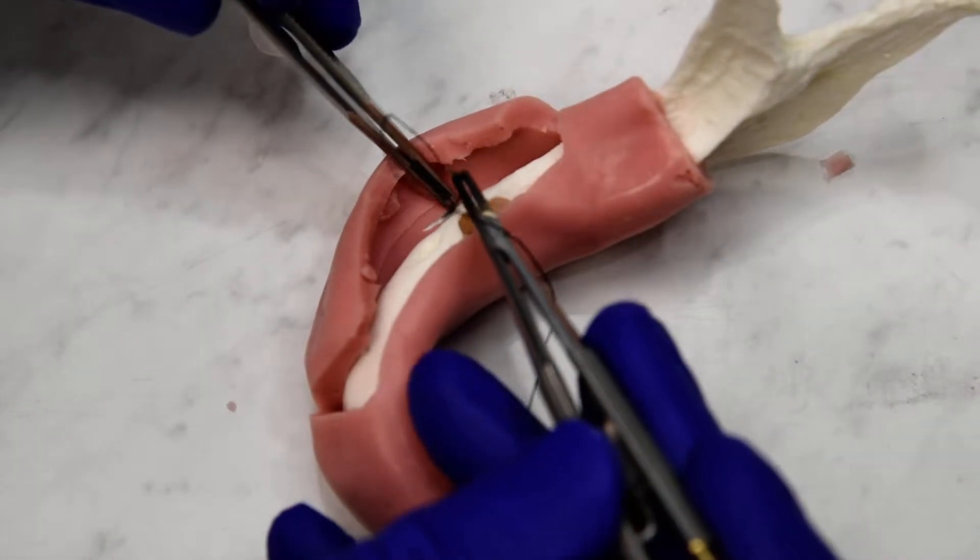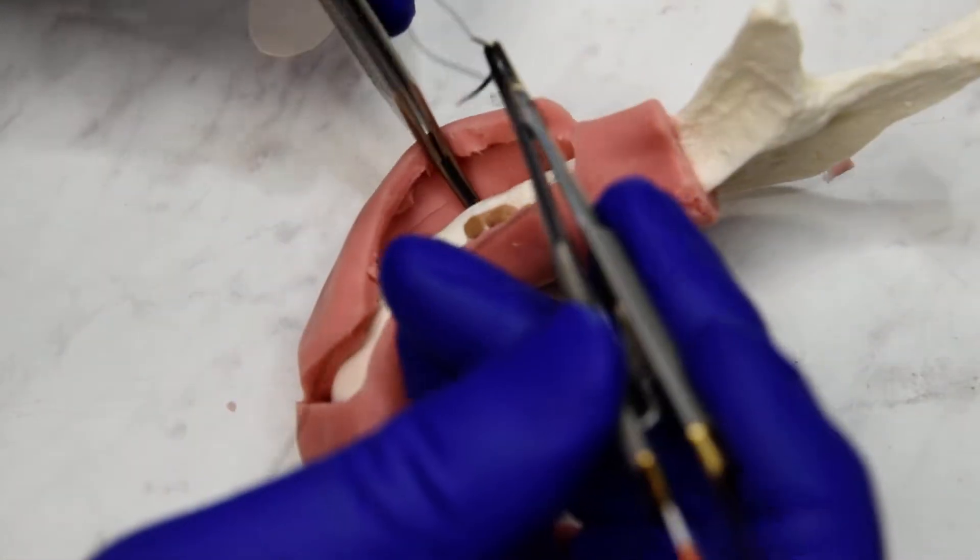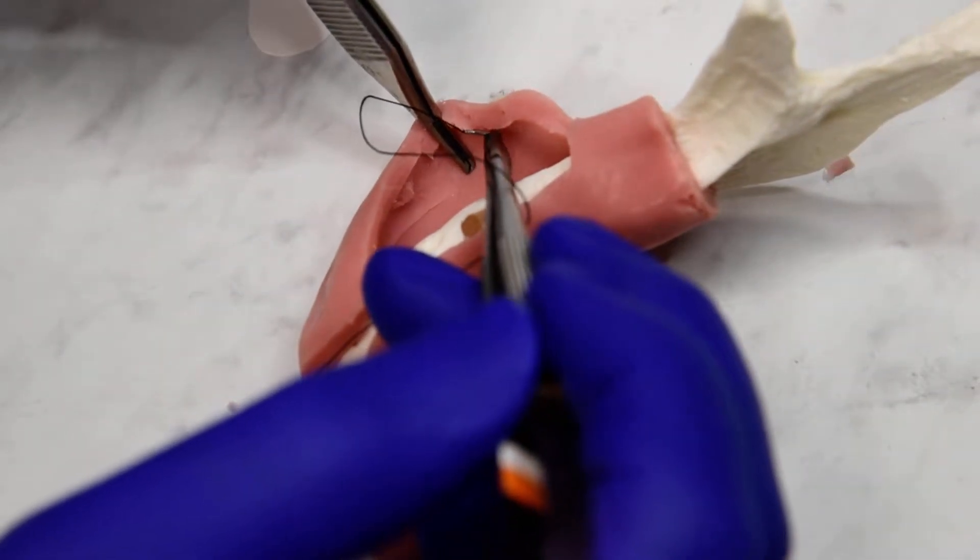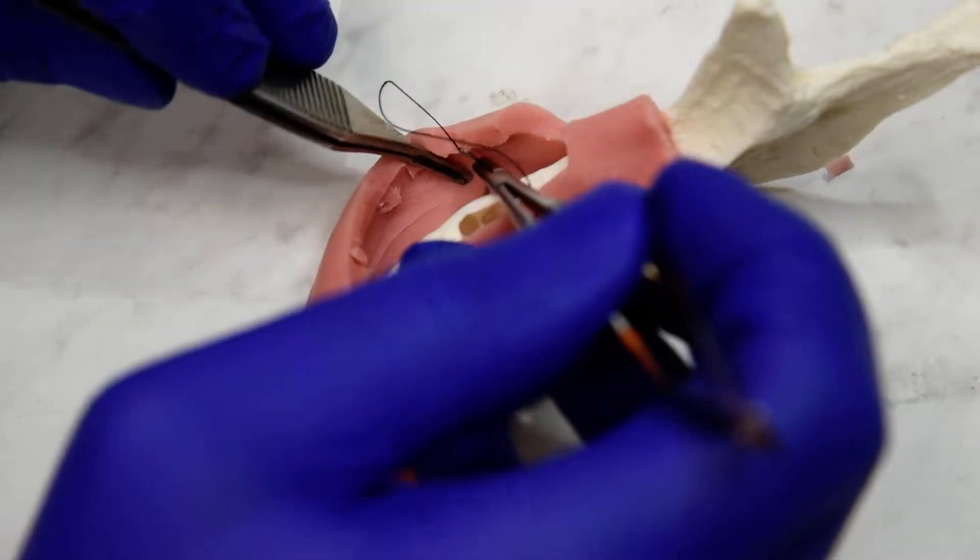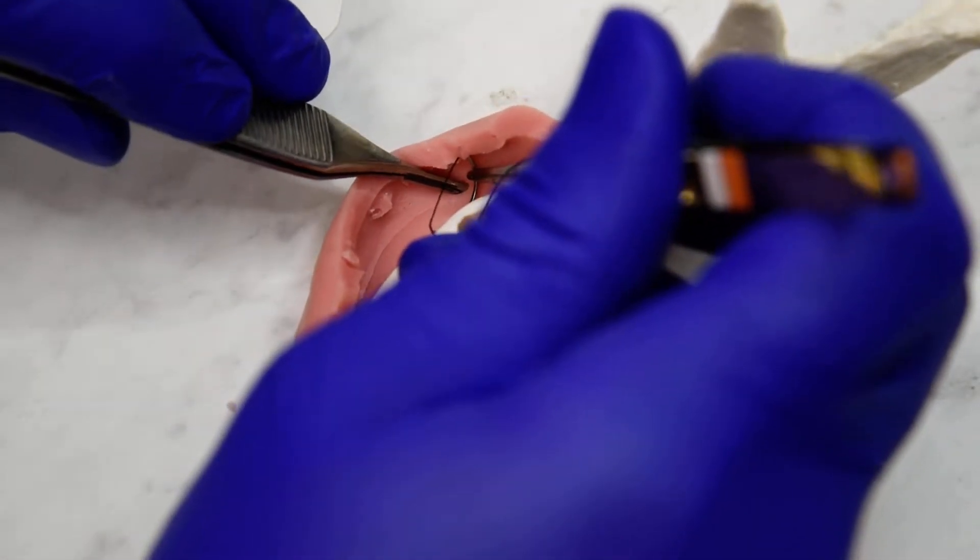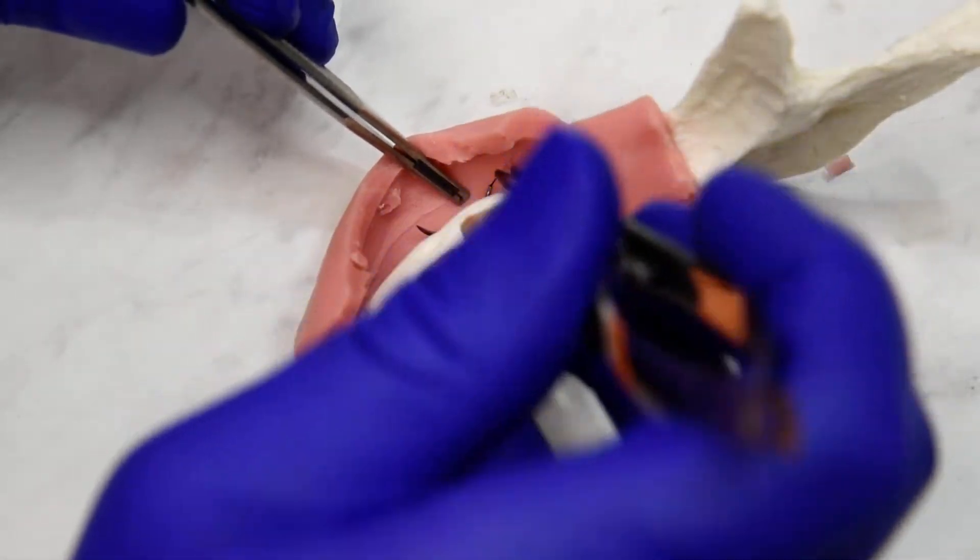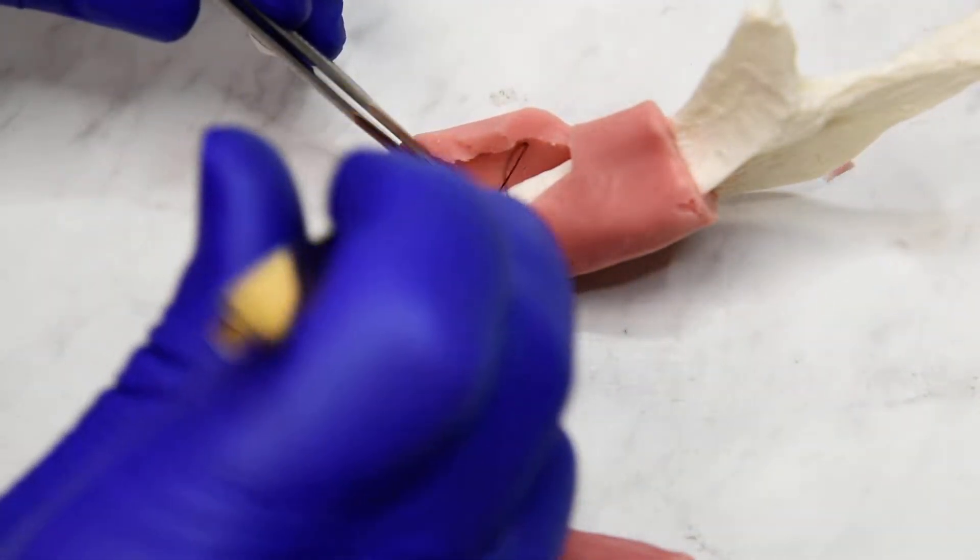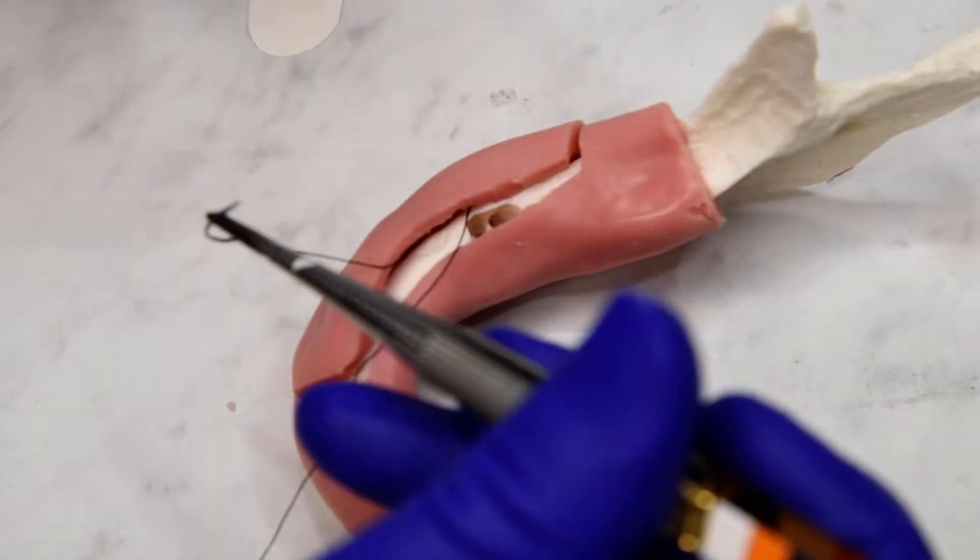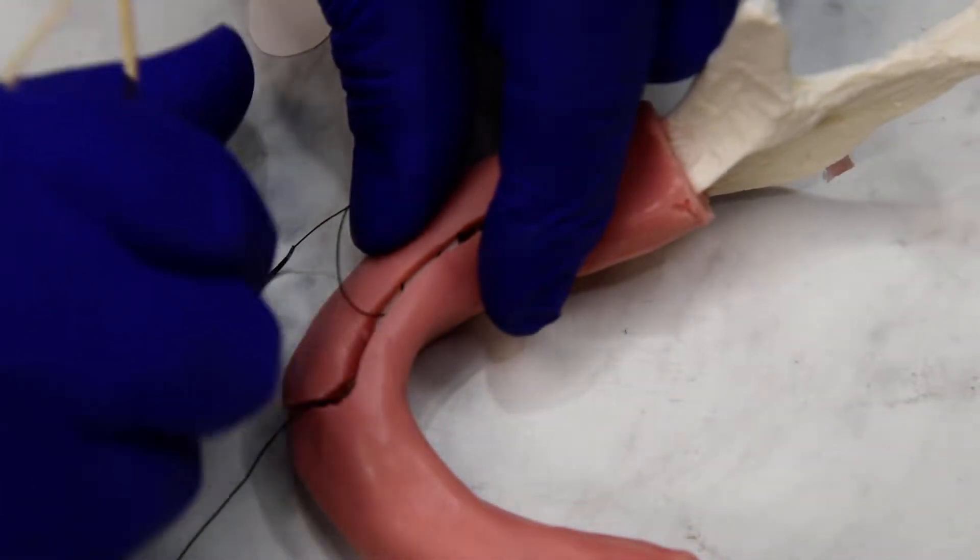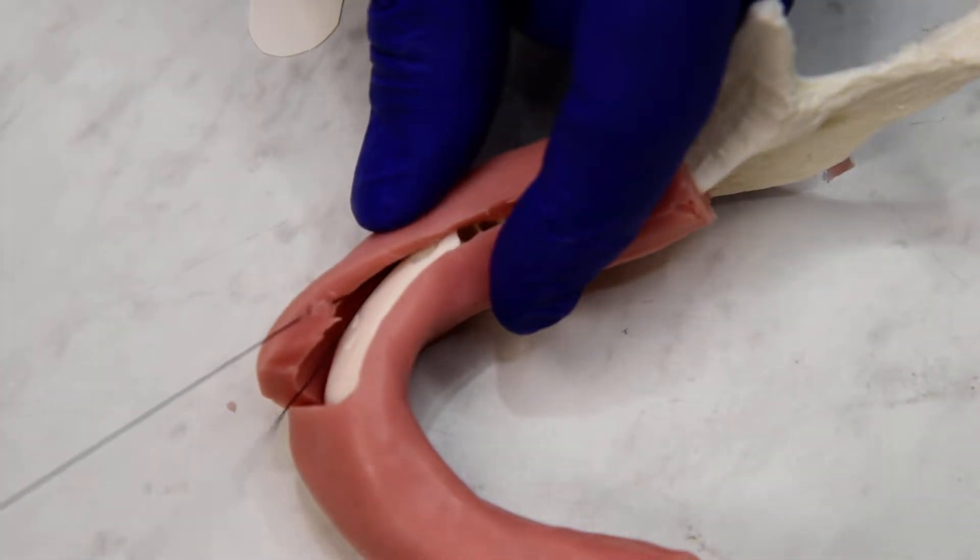So before we put any membrane or bone, we're going to do our buccal periosteal bites starting in the distal. Get your most distal bite first. You can see we're just biting the periosteum, and then we can get our tail a little shorter here.